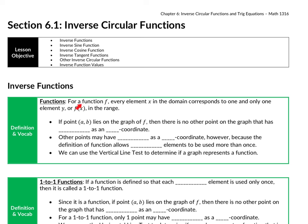A function is defined so that every element in the domain corresponds to one and only one element in the range. Basically, the x's cannot repeat — that's something we've learned since algebra 1. So if point (A, B) lies on the graph of F, there is no other point on the graph that has A as an x-coordinate. Other points may have B as a y-coordinate, meaning the y's can repeat. We use the vertical line test to check that a graph represents a function.